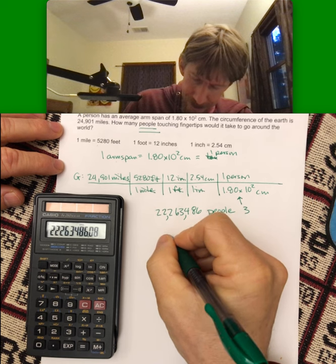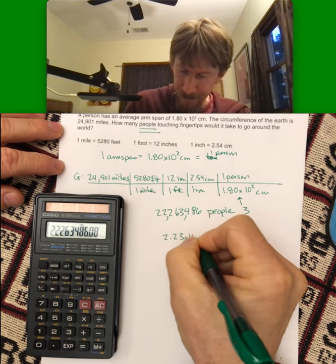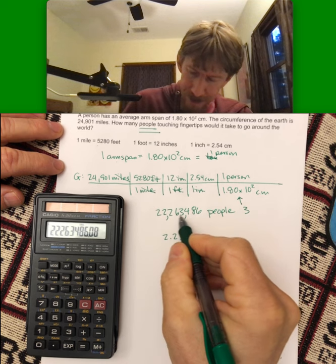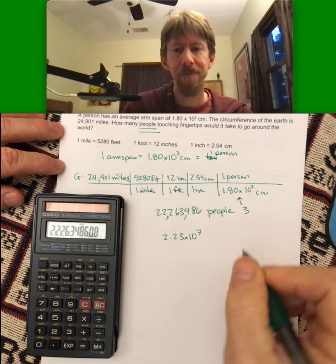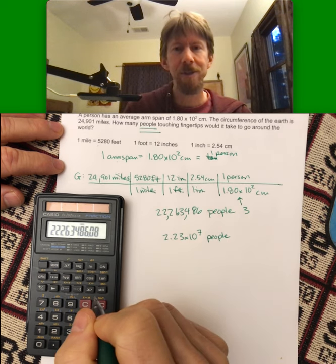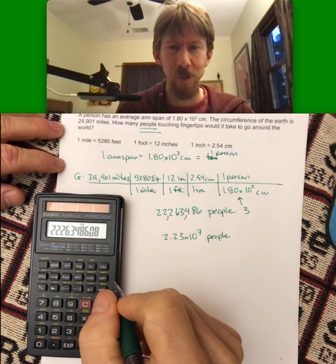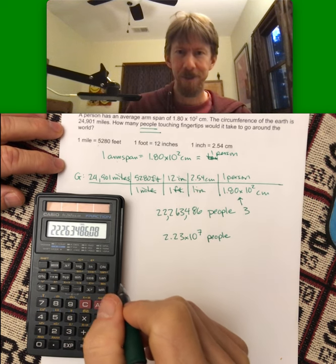So I'm going to do 2.23 times 10 to the seventh people is how many people it would take to go around the world touching fingertips.